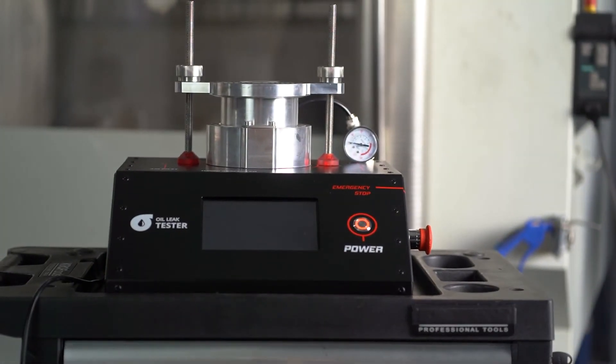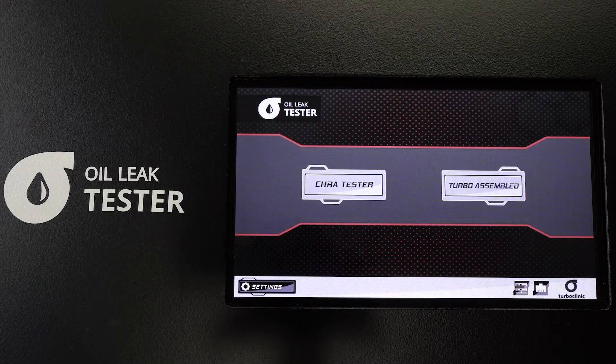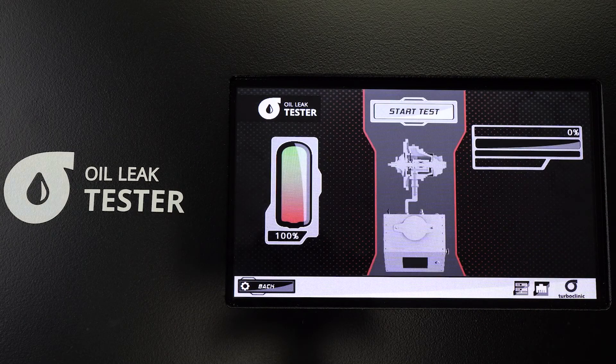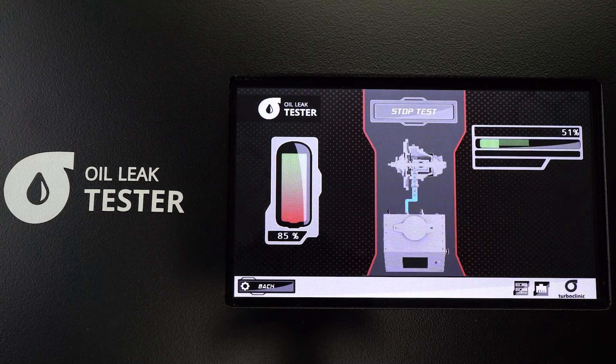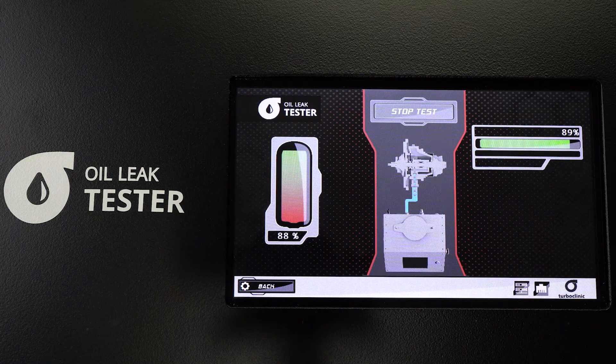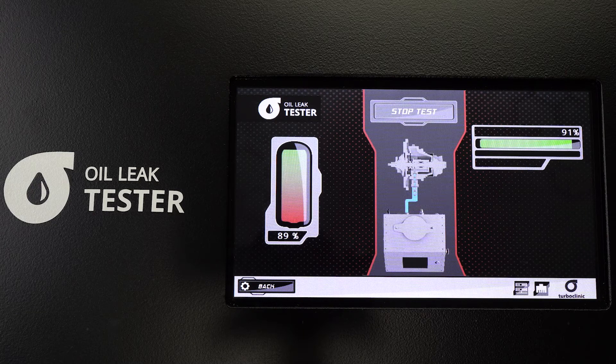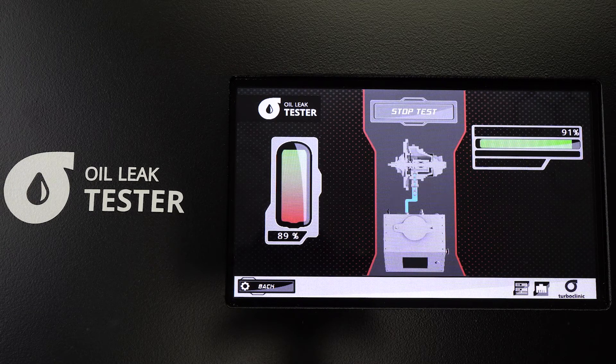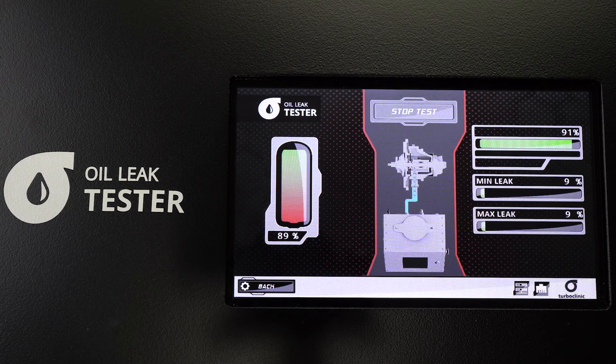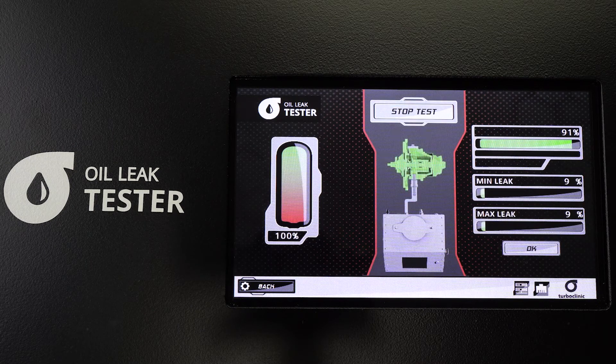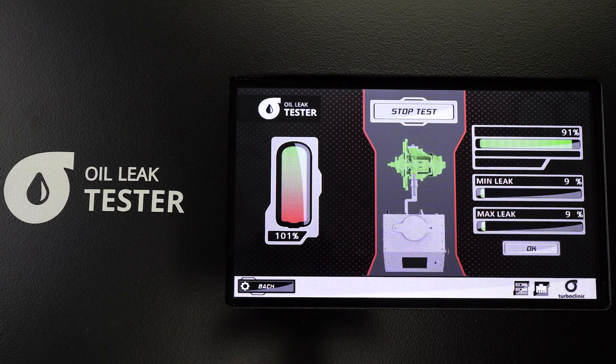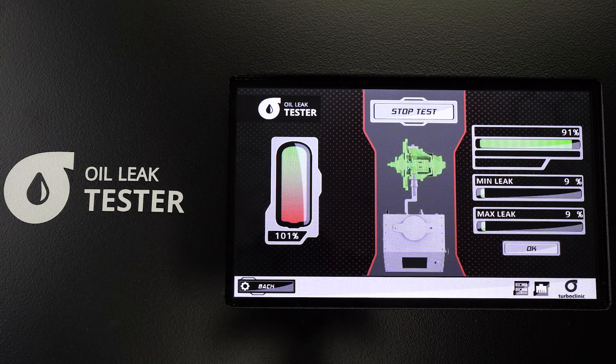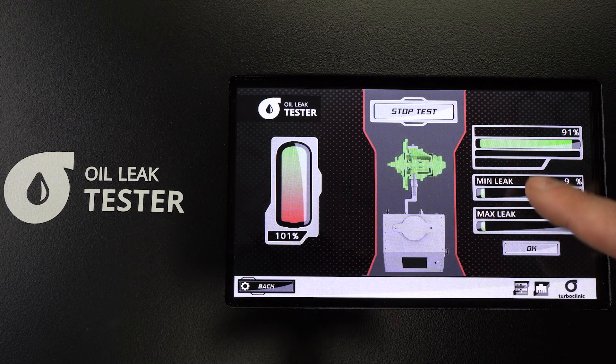The test on the Oil Leak Tester standalone will be done the same way for both options. Just enter Turbo Assembled and Start Test. The test will give you the pressure percentage. If the cartridge on the screen turns green, then the test is OK. If the cartridge turns red, then the test has failed and you may have a leak.